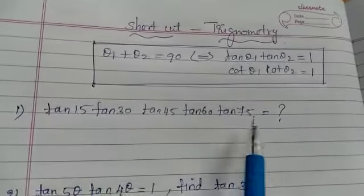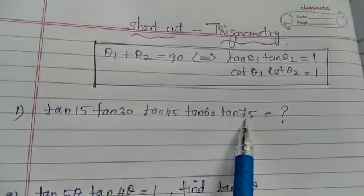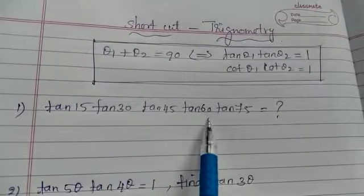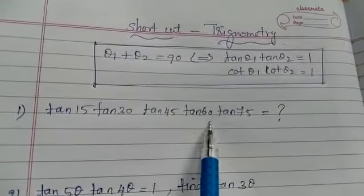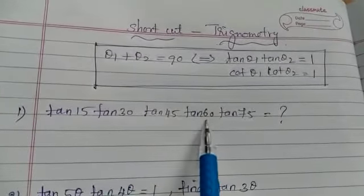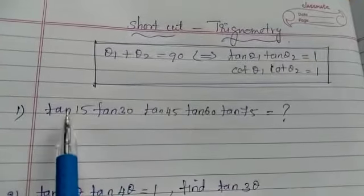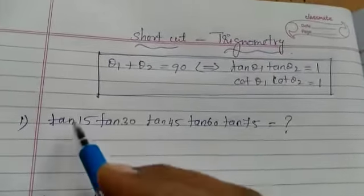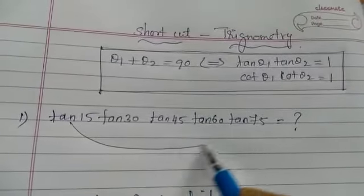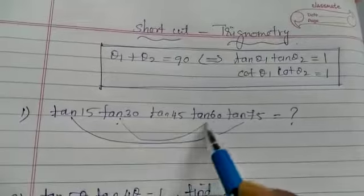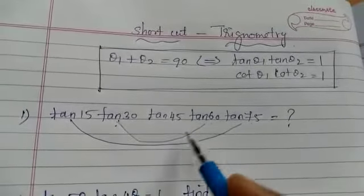15 plus 75, the sum is 90 degree. And also 30 plus 60 degree, sum also 90 degree. So what is the answer? tan 30 into tan 60 is 1. Then tan 15 into tan 75 is 1. So what is the answer? tan 15 into tan 75 is 1, tan 30 into tan 60 is 1.